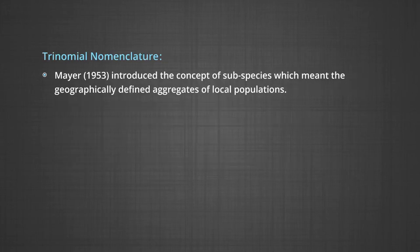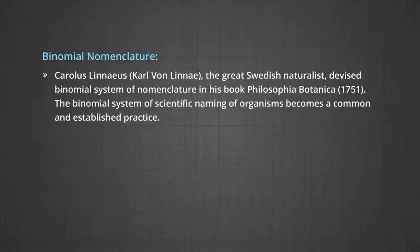Trinomial nomenclature: Mayr, in 1953, introduced the concept of subspecies, meaning geographically defined aggregates of local populations. The naming of a species — especially an animal — up to subspecies level is called trinomial nomenclature. Examples include Homo sapiens sapiens and Homo sapiens neanderthalensis. Botanists do not consider trinomial nomenclature.